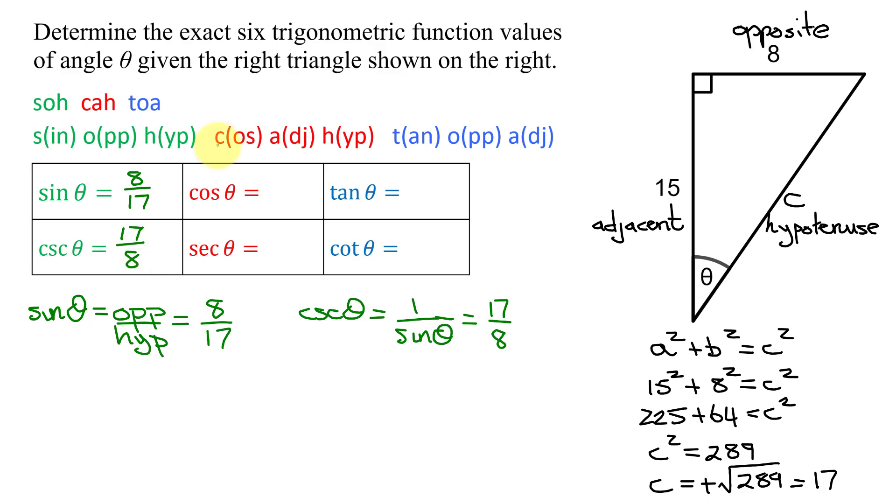Next, I need to find the cosine of theta. So the cosine of theta is adjacent over hypotenuse. The adjacent side was 15. The hypotenuse is 17. So cosine theta is 15 divided by 17.